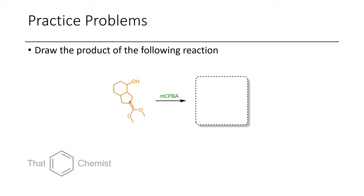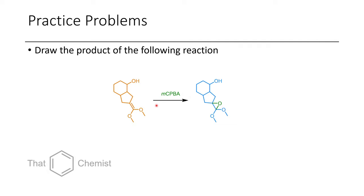In the next problem, we have an alkene with two methoxy groups as well as an alcohol. If we use MCPBA, that alcohol won't get affected and we'll only form an epoxide. This is a rather exotic-looking epoxide because we also have alkoxy groups on it. You could imagine that if we added some nucleophile, or used a Lewis acid to rearrange this, we would be afforded an ester with an alpha-hydroxy group.